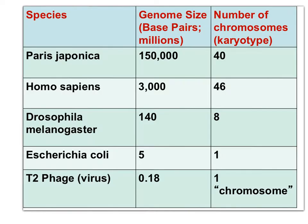Here is a direct comparison of the genomes of these five species, with all values given in millions of base pairs. The virus has a very small genome, but Parastroponica, a rare Japanese plant, has a huge genome — some 50 times larger than the human genome.